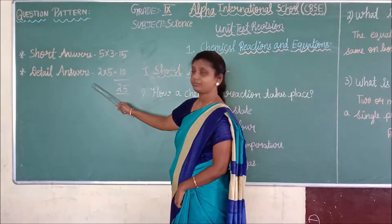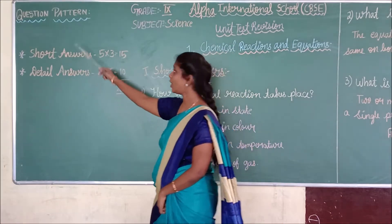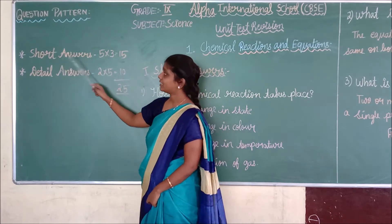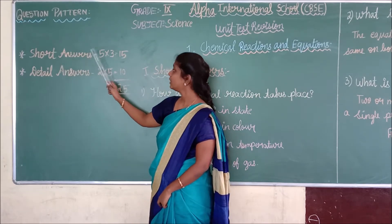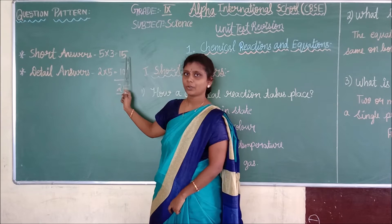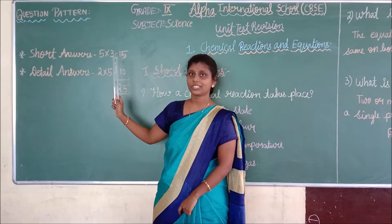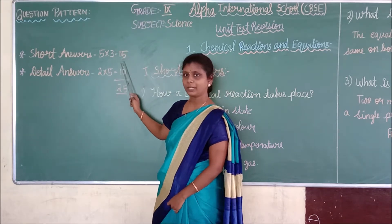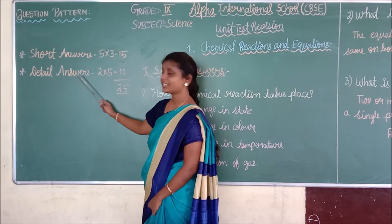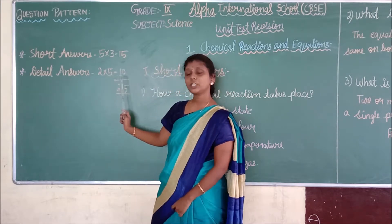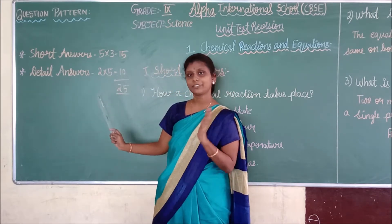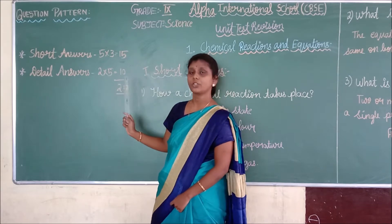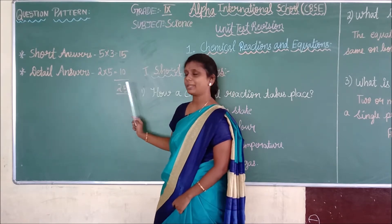Here is your question packet. For short answers you will be answering for 15 marks — each question carries 3 marks, totalling 15 marks. Next, detail answers for 10 marks — each question carries 5 marks. Totally you are going to write your unit test for 25 marks.